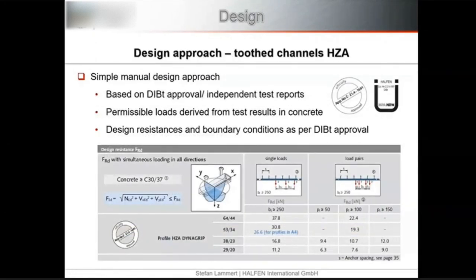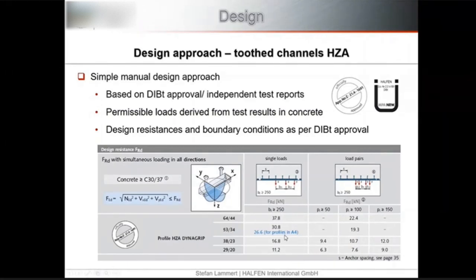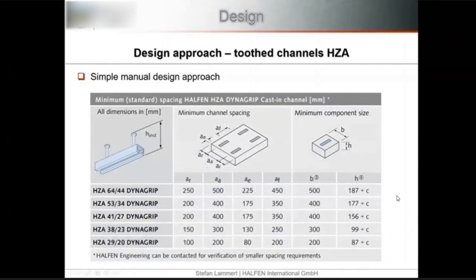The design software provides utilization ratios and identifies the decisive failure mode — enabling the designer to make targeted improvements. For example, if the decisive mode is the interaction between concrete cone failure (NRdc) and concrete edge failure (VRdc), options include adding edge reinforcement or increasing the concrete grade. For serrated tooth channels, design is still based on the DIBt national approval or independent test reports, using supplier-provided load tables with permissible loads from testing, valid only under specified standard spacing and minimum component conditions.